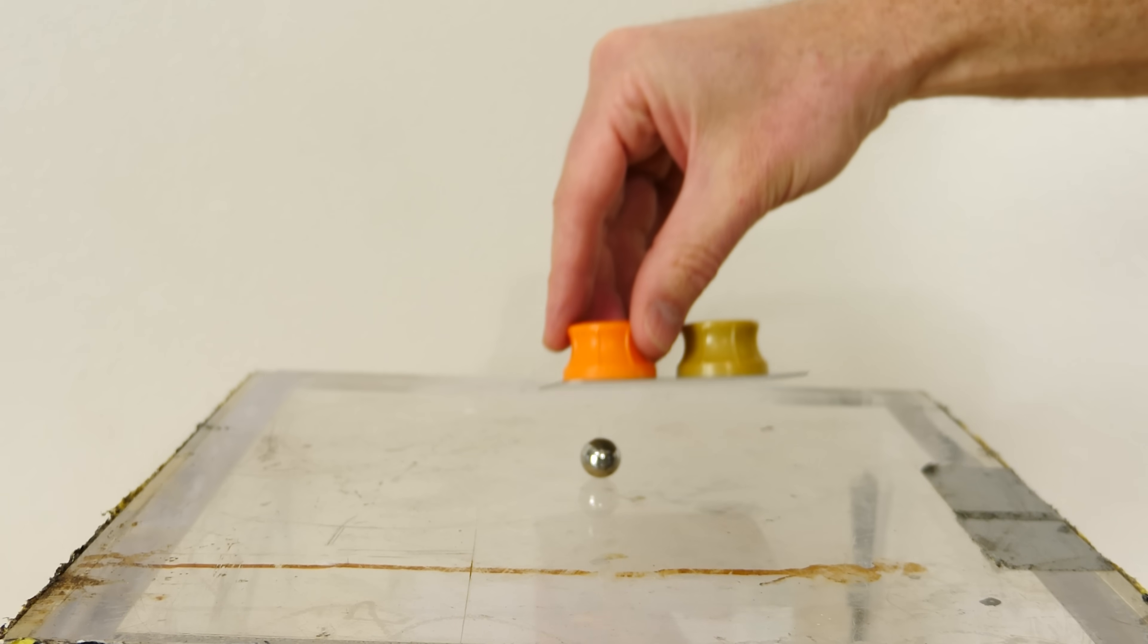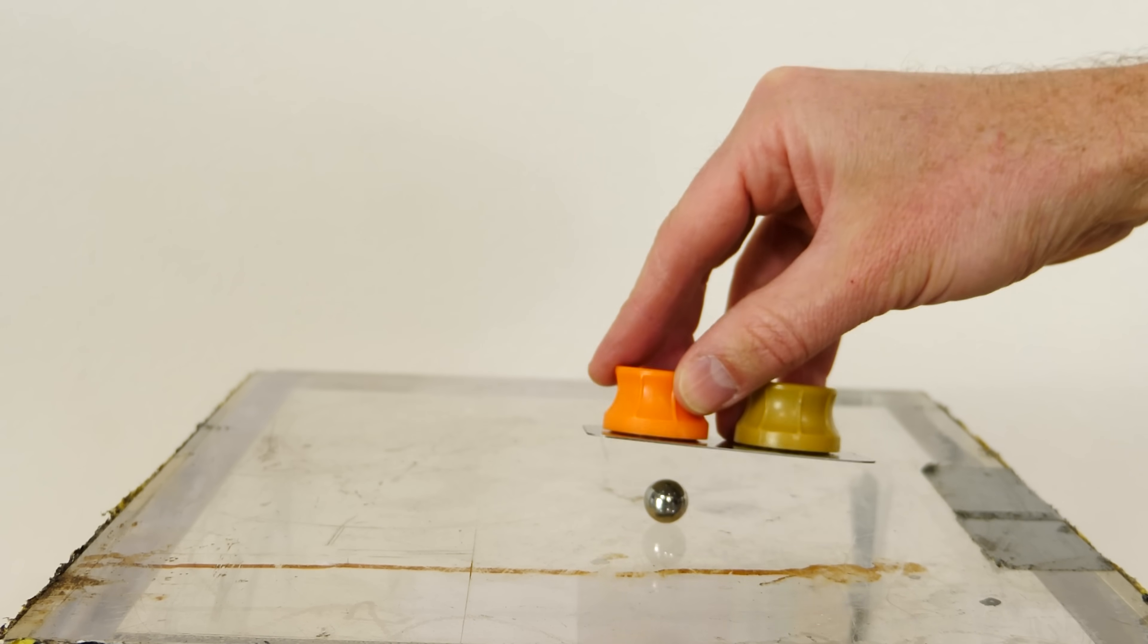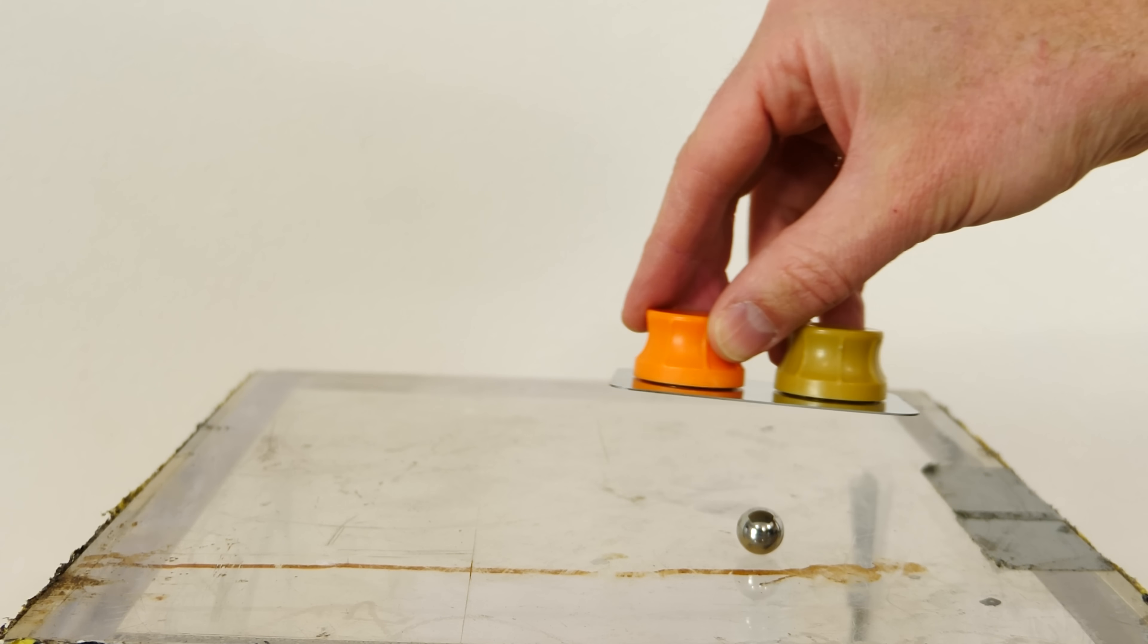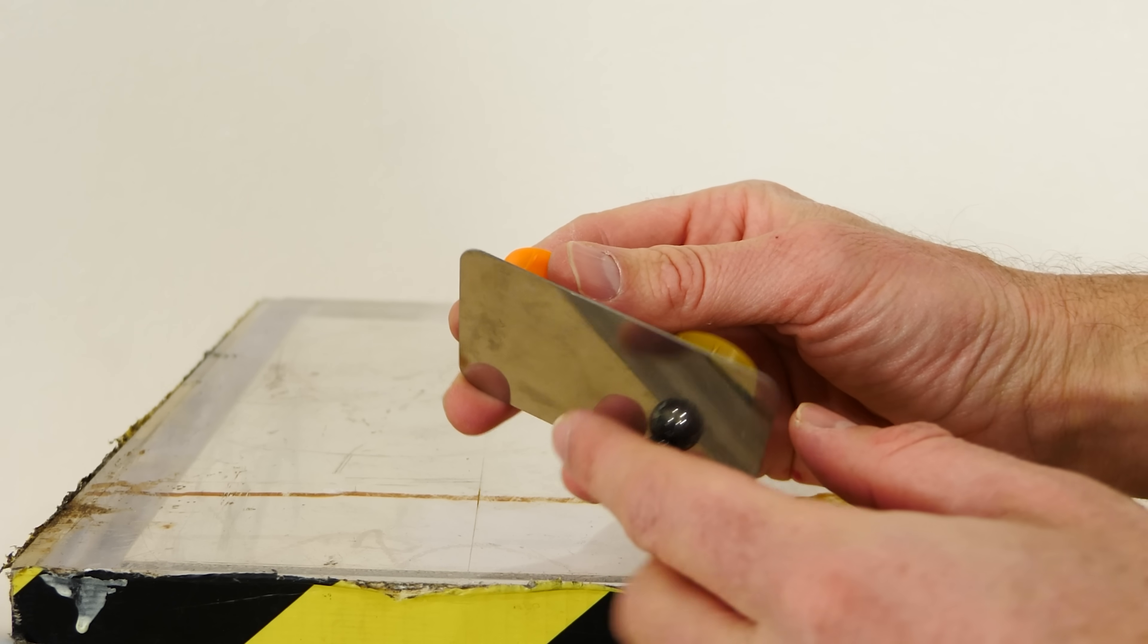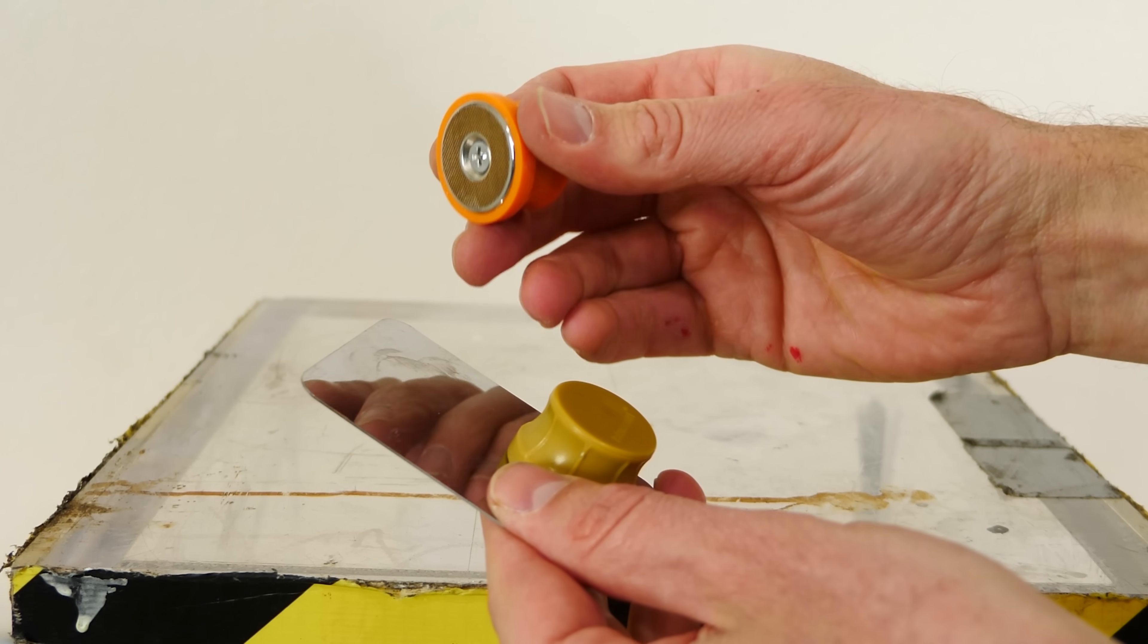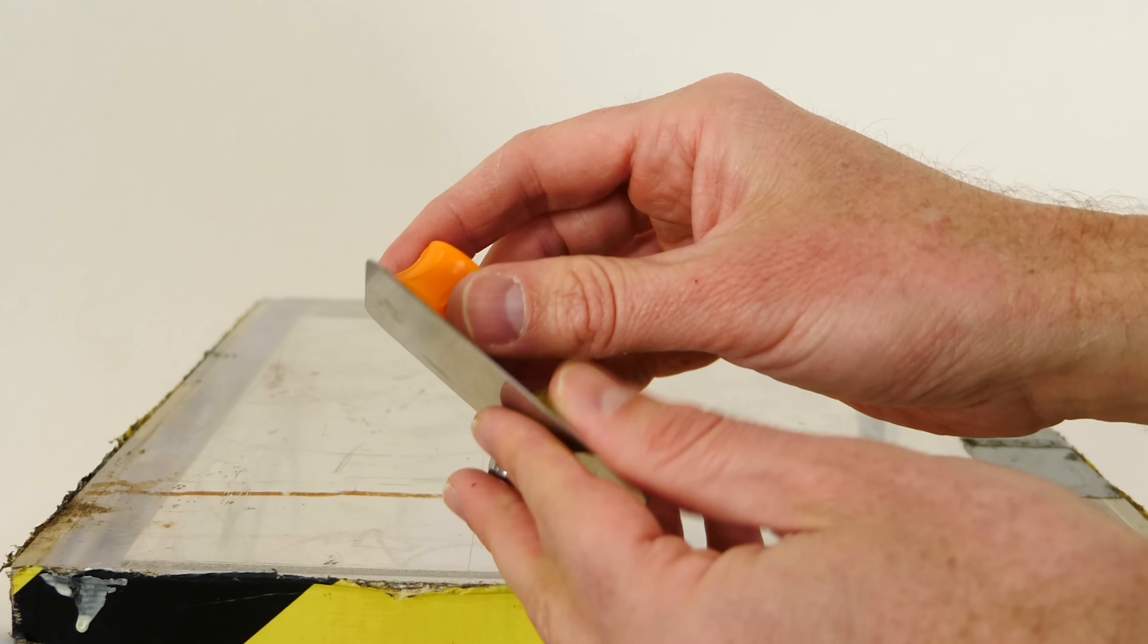But watch what happens when I put it on the side with the smart magnet. There's no leakage. So it can't pick this up, but the conventional magnet can. Now this is really cool. It makes shielding of the magnet really easy while you still get the strong force of attraction really close up to it.